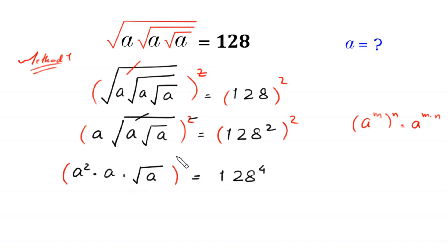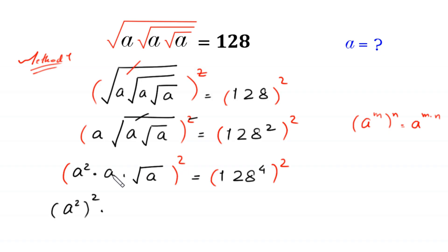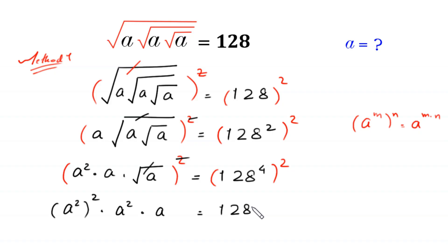Now from here we take the square of both sides again. This power 2 will become the power of this a — a squared — and this square will cancel out with this square root. Here we are left with a squared times a squared times a is equal to 128 to the power 8.